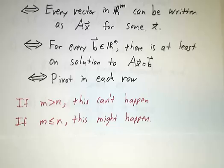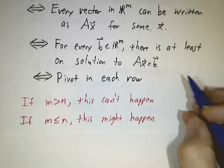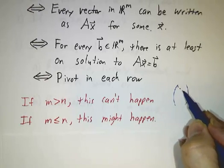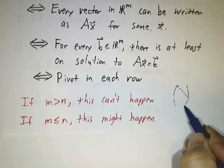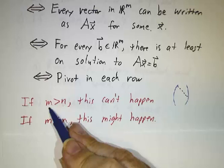And once again, if you have a tall and skinny matrix, that can't happen. You can have at most one pivot in each column, but then there's some rows left. If you have more rows than columns, you can't have a pivot in each column.